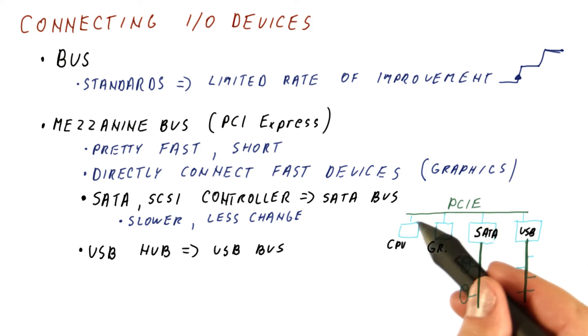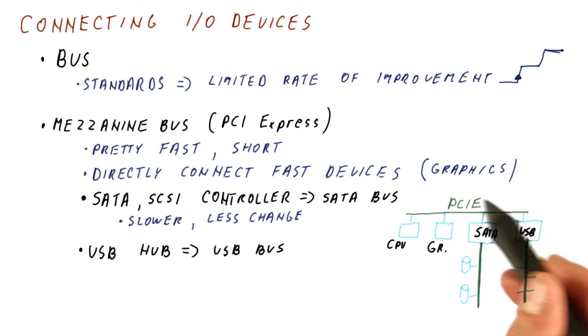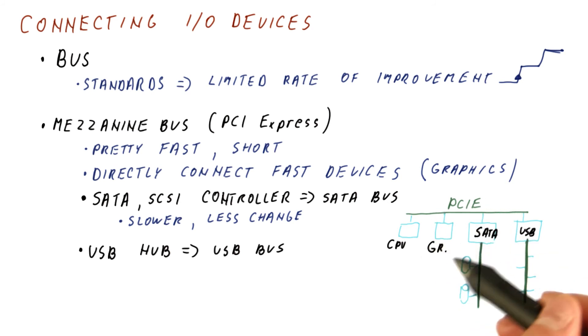The closer we get to the processor, the more important it is to keep improving speeds, because some devices like graphics need that speed. But for storage and for many standard USB devices, we're much more interested in standardization, so we can interchange these devices and not have them tied to a particular technology, requiring changes every year or two.